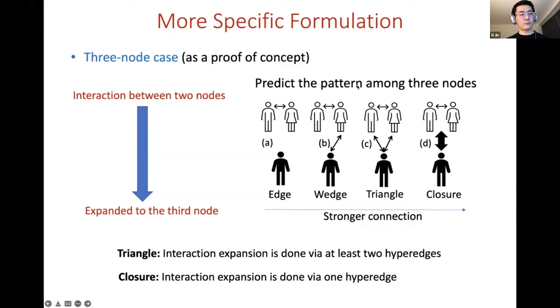The third type is the triangle where the third node interacts with both of the nodes but not simultaneously, or say the interactions may happen via two different hyper edges. The fourth type is a closure where the third node will interact with both nodes simultaneously via one hyper edge. Intuitively from pattern A to pattern D we can see the interactions become stronger and stronger which essentially give us a hierarchy here.